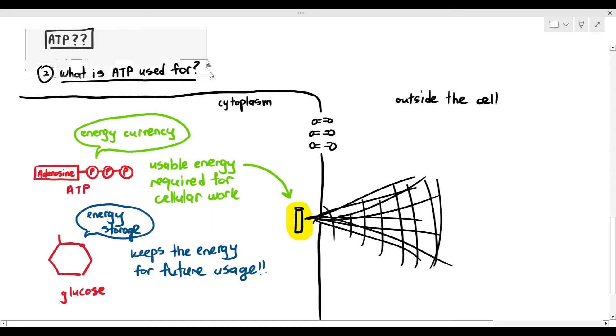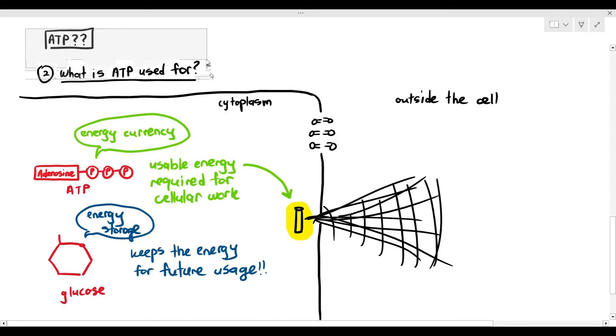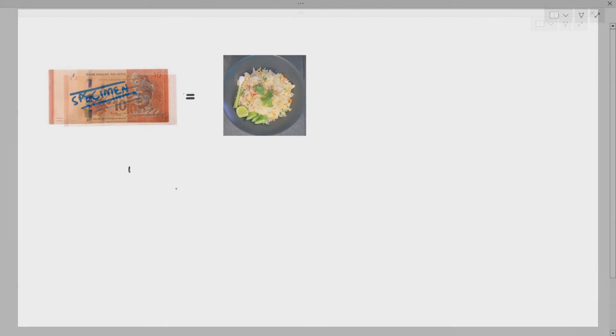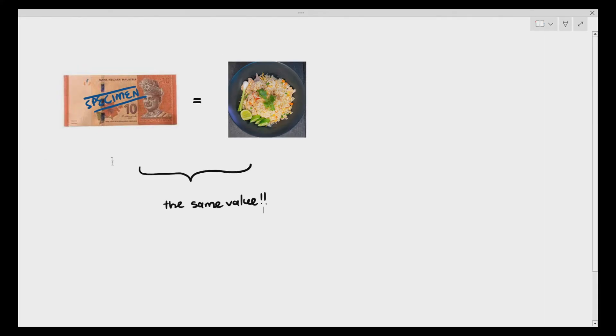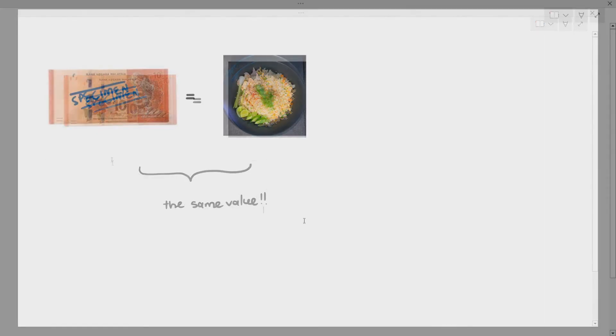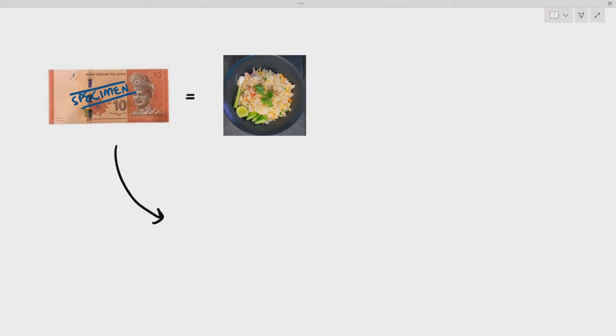Then you might want to ask the question, why do we say that glucose is also a source of energy? I'm going to explain that in a while. Just keep that at the back and we will talk about that later. Another way to talk about this is, imagine like a note, 10 ringgit over here, that's the currency from my country, Malaysia, and imagine a plate of fried rice. 10 ringgit and the plate of fried rice also costs 10 ringgit as well. So technically, in terms of value, they are both the same value.